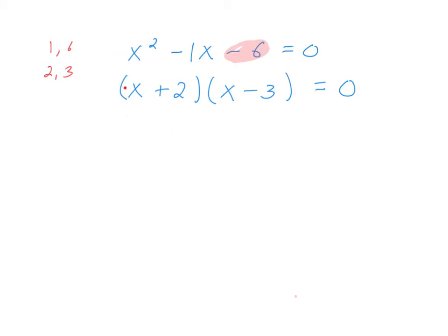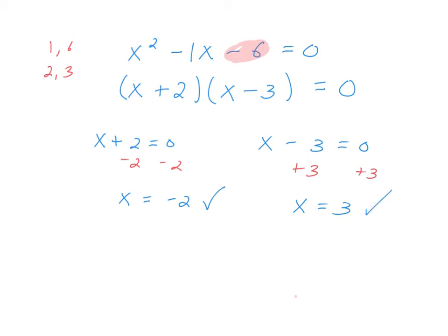So x squared minus x minus 6 factors as (x plus 2)(x minus 3). To solve this equation, take each individual factor and set it equal to 0. To solve x plus 2 equals 0, subtract 2 from both sides — we get x is equal to negative 2. Likewise, to solve x minus 3 equals 0, add 3 to both sides — that gives x is equal to positive 3. This matches up with our solutions from before. So here's another method: factor it and check where each factor equals 0.